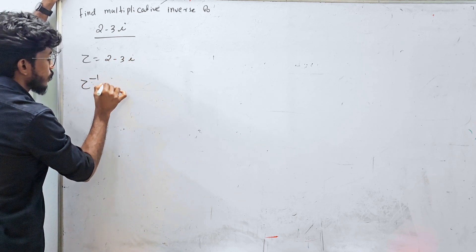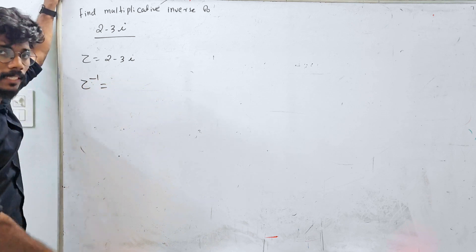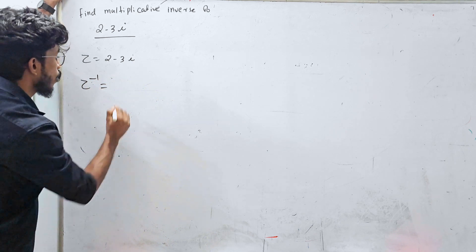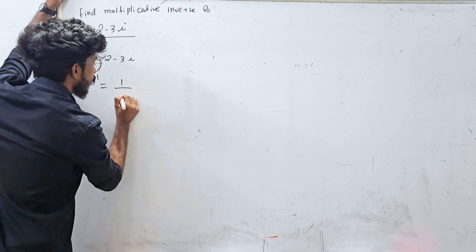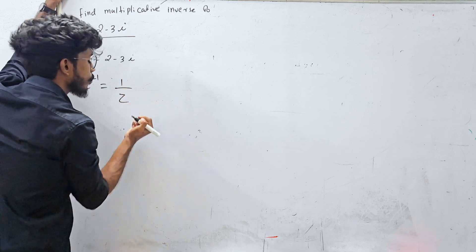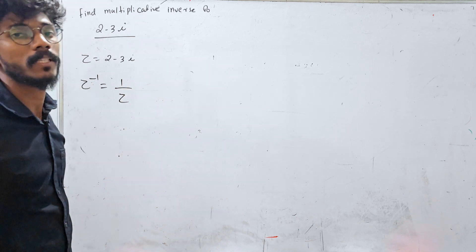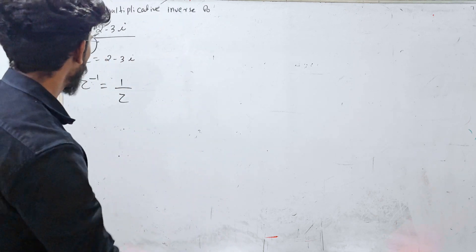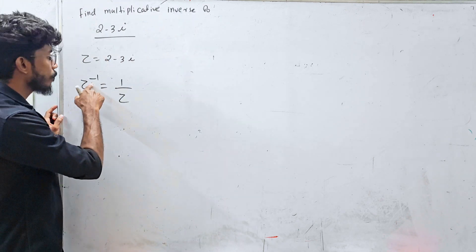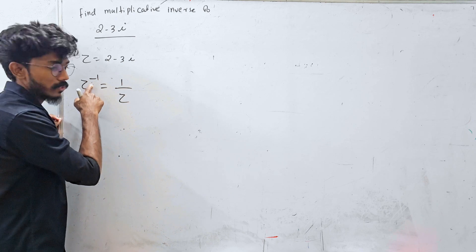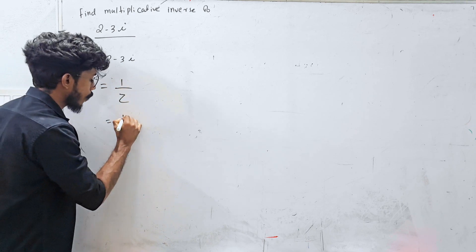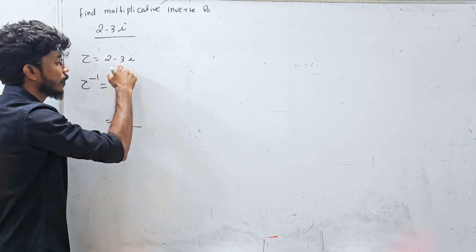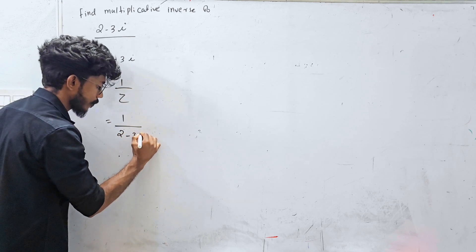This is the multiplicative inverse. The multiplicative inverse is simply 1 by z. So 1 by z, where z is 2 minus 3i.